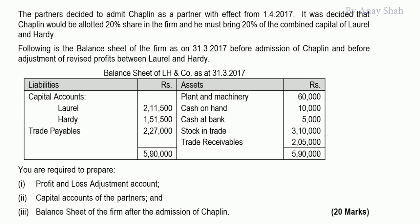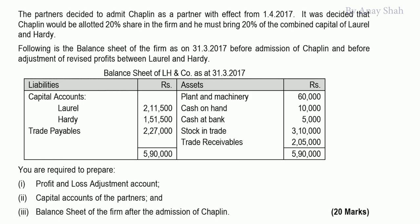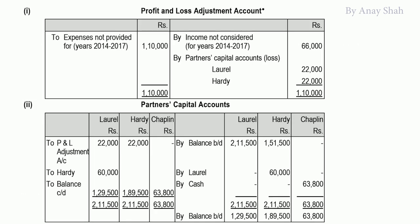The question asks to prepare: P&L Adjustment account, capital accounts, and balance sheet after admission of Chaplain as new partner. The P&L Adjustment account is for recording the mistakes made in previous years — expenses not recorded, incomes not recorded. These go into the P&L Adjustment account, not revaluation. Alternatively, one can directly record in capital accounts; but since the question specifically asks for P&L Adjustment account, we prepare it. It ultimately closes into the partners' capital accounts.